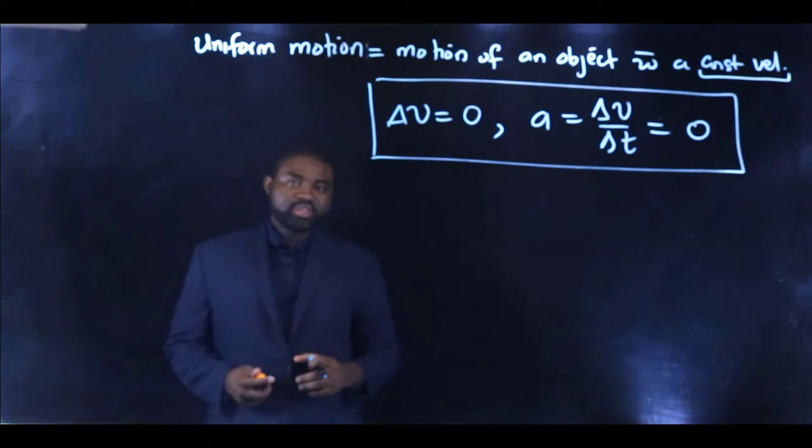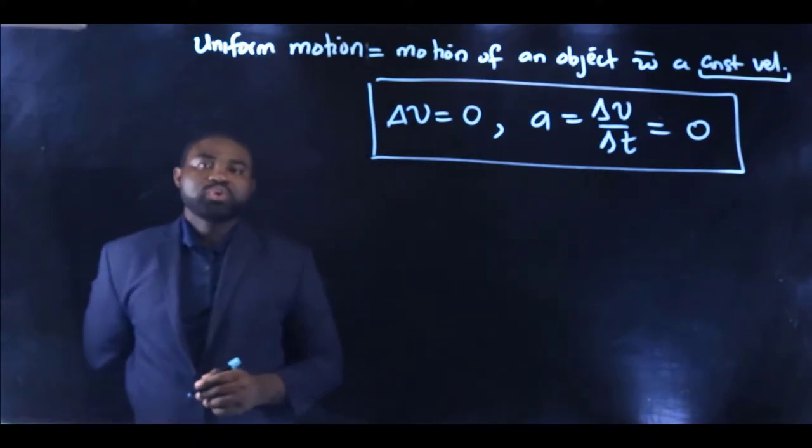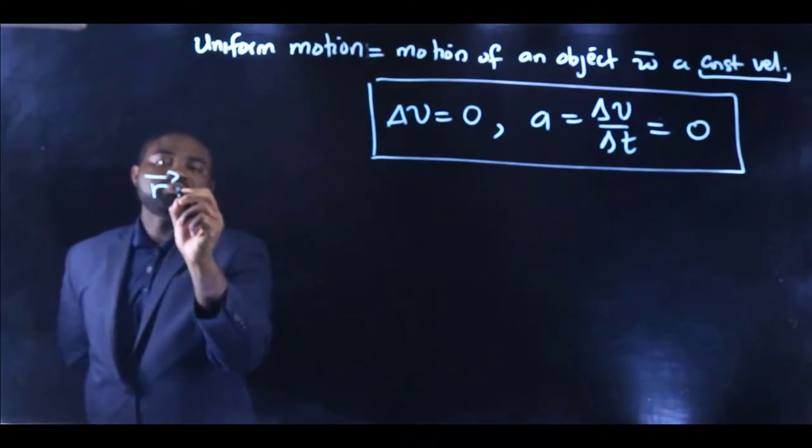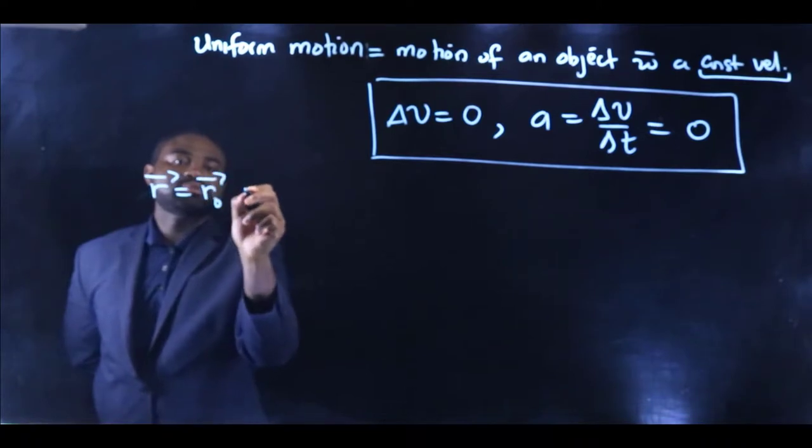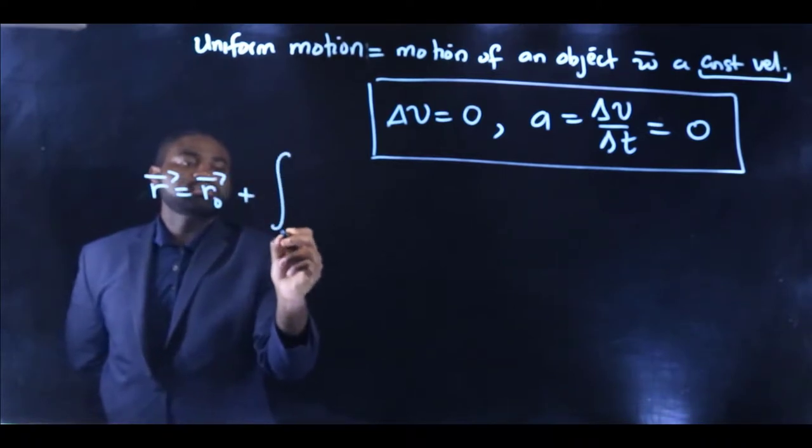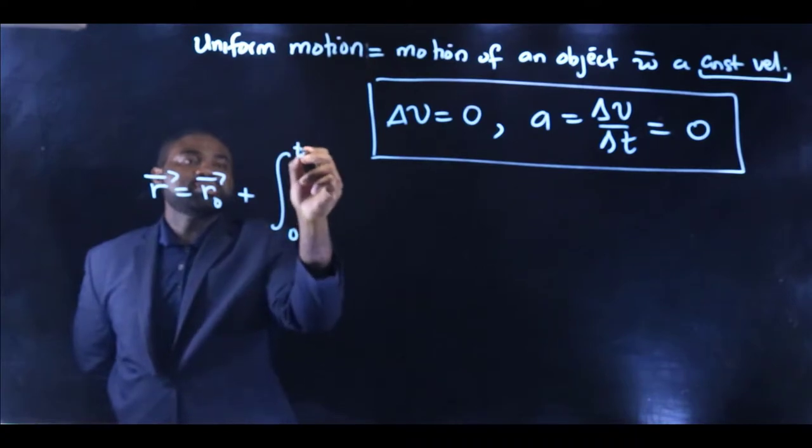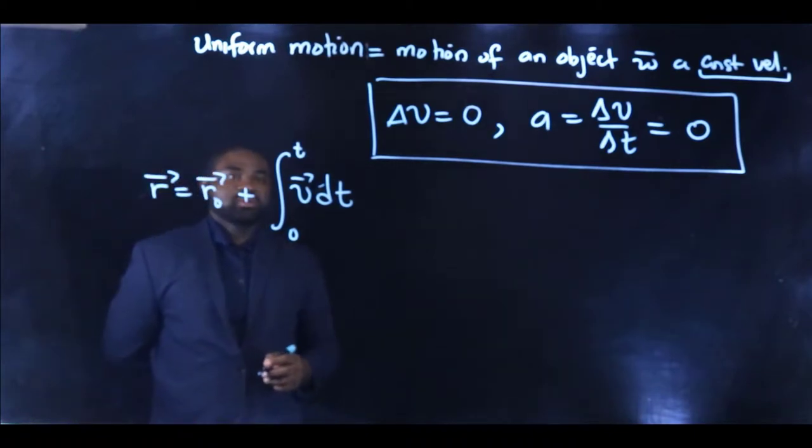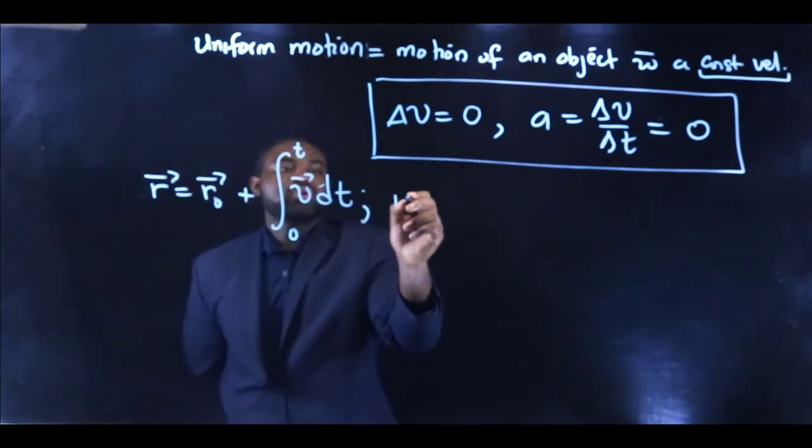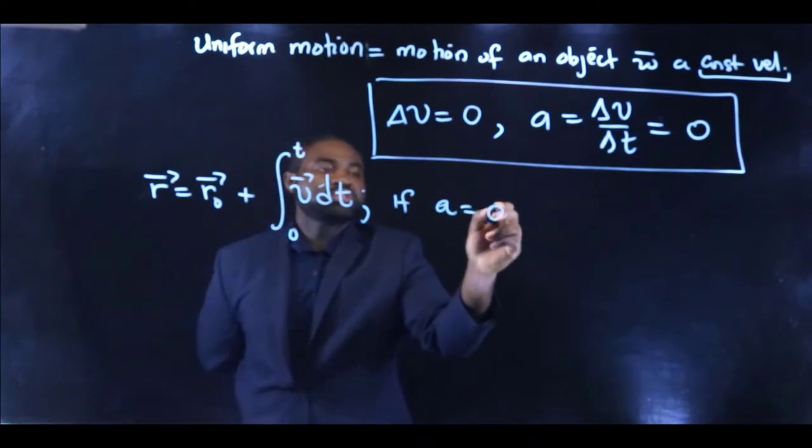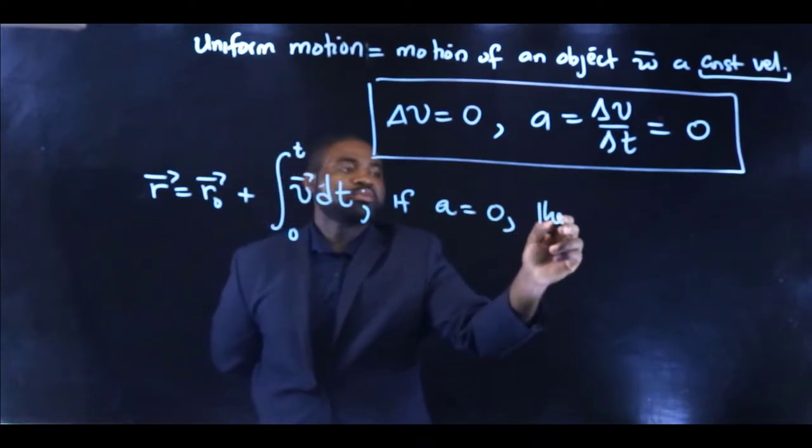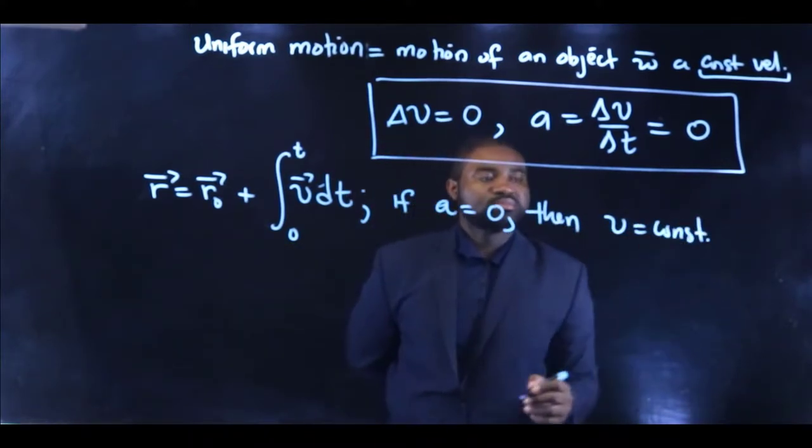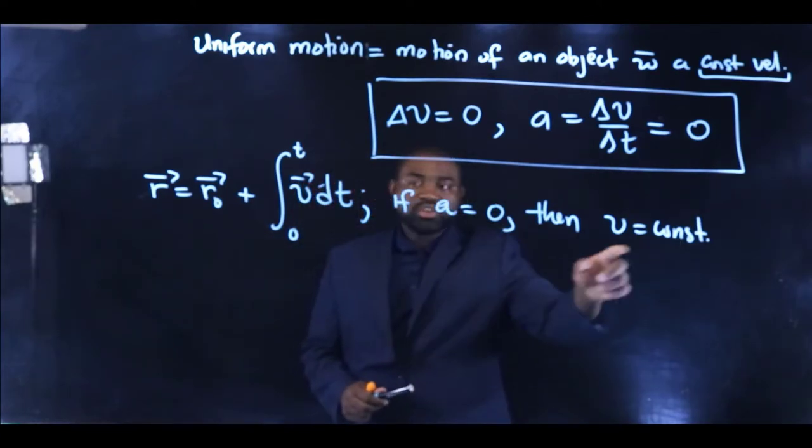Now, here's the thing. We know that generally, R⃗ is equal to R⃗₀ plus the integral from zero to t, V⃗ dt. So if a is equal to zero, then V⃗ is constant.